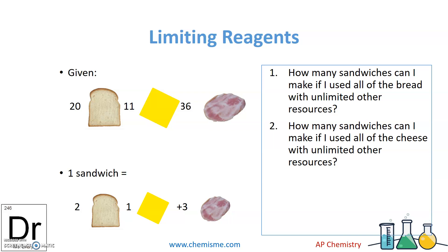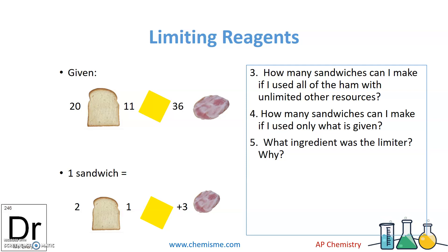Let's do the same with cheese: I only need one per sandwich and I have 11, so that gives 11 sandwiches. For ham, I need three per sandwich and I have 36, so that gives 12 sandwiches. How many can I actually make? Bread gives 10, cheese gives 11, ham gives 12. So I can make 10 sandwiches because it's the lowest value. I'll have an extra slice of cheese and a few extra slices of ham. The bread is the limiting reactant because it limits us to 10 sandwiches.